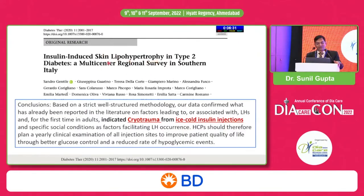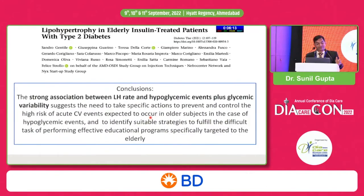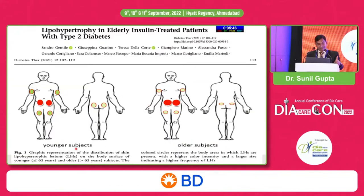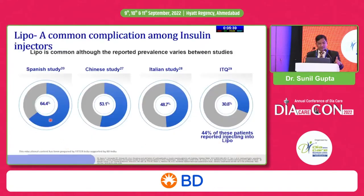Data published in 2020 shows cryotrauma from ice-cold insulin injections is a risk factor for lipohypertrophy. In elderly patients, 2021 data shows a strong association between lipohypertrophy rate and hypoglycemic events plus glycemic variability — something we never considered before. Glycemic variability is itself a big risk factor for cardiac events. Epidemiologically, most studies report lipohypertrophy risk at around 30–70%, with the abdomen being more common in elderly versus younger patients.